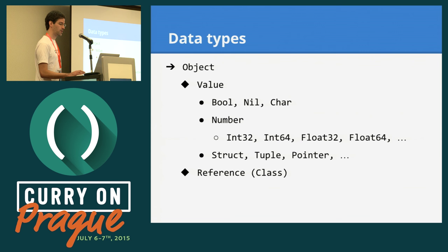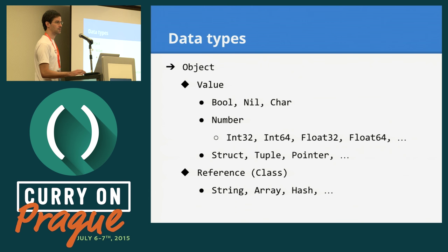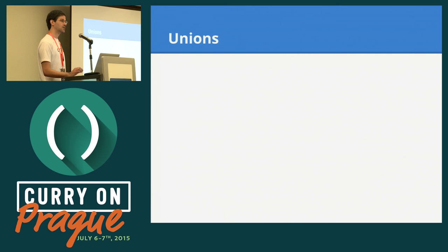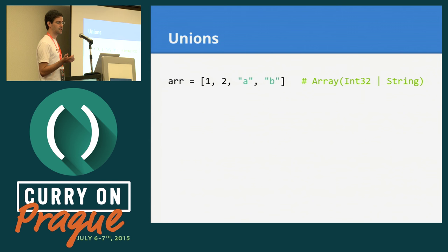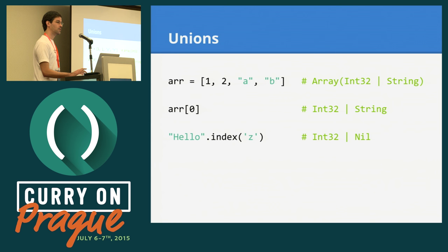The second big category is reference types — objects allocated on the heap and passed by reference. They are managed by a garbage collector, so we don't have to take care of memory management. Crystal also has the concept of union types, which happens when a variable has more than one type across different points in the program. For example, here we have an array of mixed types — numbers and strings. When we access one of those elements, what we get back is a union type.